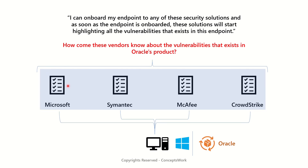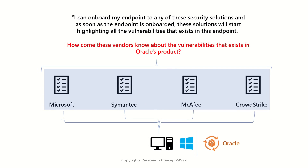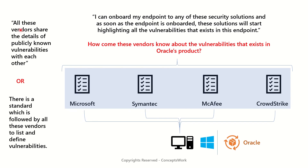Similarly, if I have an Oracle application installed on this endpoint, all these security solutions will start highlighting the vulnerabilities that exist for a specific build or version of that Oracle application. Again the question remains the same — how come these four vendors know about the vulnerabilities that exist in an Oracle product? This can only be possible if either all these vendors share the details of publicly known vulnerabilities of their own products with each other.